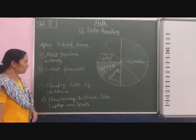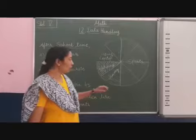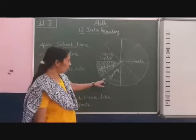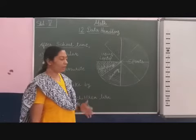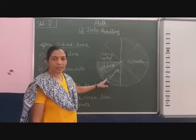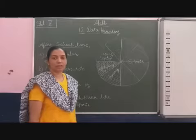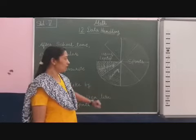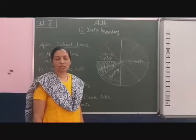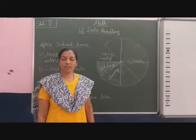The least favorite means the smallest part of the whole. The least part is dancing. If I want to represent dancing as a fraction, it is one-eighth. One-eighth obviously represents the dancing activity. So these students are spending their time in dancing after school.